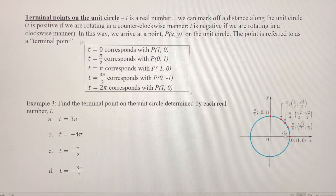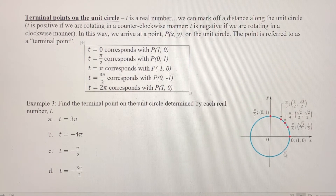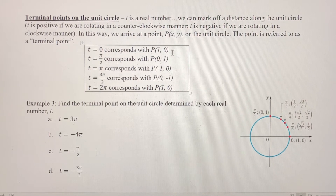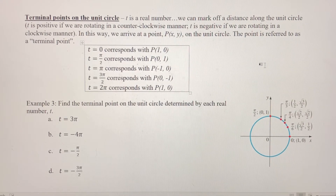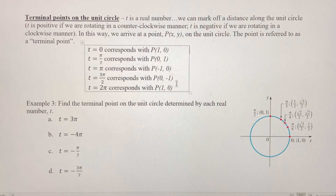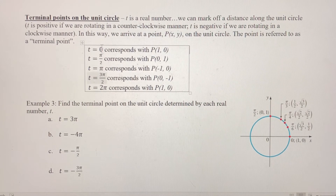Finally, T equals 2π — we're going all the way around, one full revolution, so we get back to where we started. Notice T equals 0 and T equals 2π have the same terminal point because they are coterminal. We're going to use these ordered pairs in the future to determine the value of trig functions for each of these values and many more.